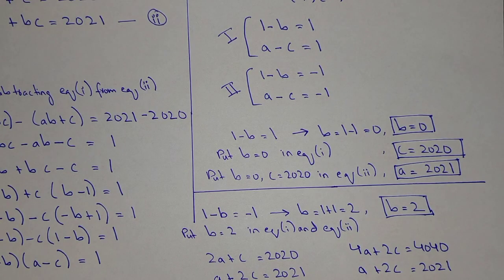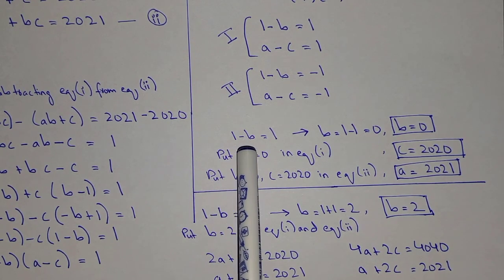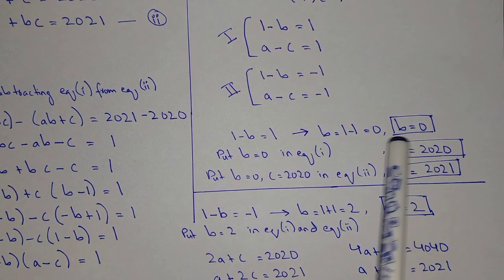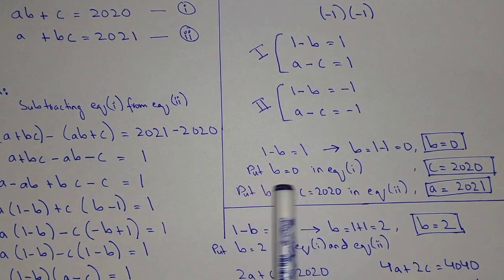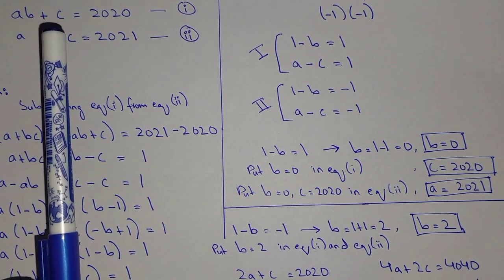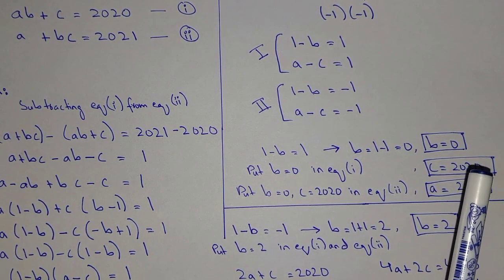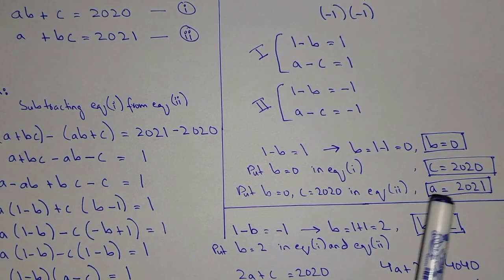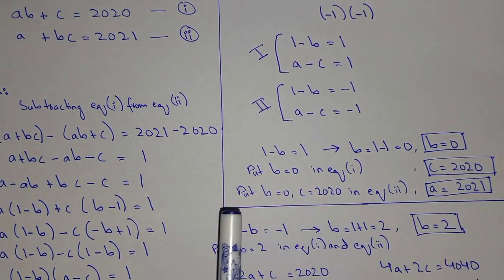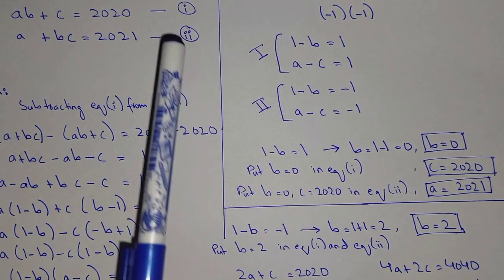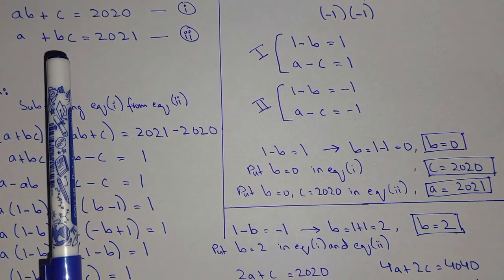We need to find the values of A, B, and C. From case 1: 1 minus B equals 1, so B equals 0. Substituting B equals 0 into equation 1, the value of C will be 2020. And substituting B equals 0 and C equals 2020 into equation 2, the value of A will be 2021.